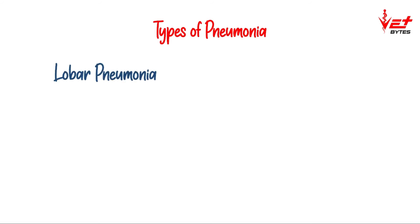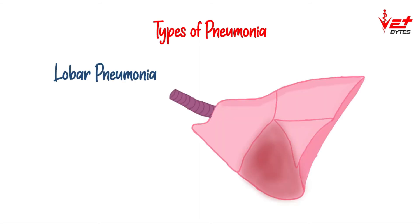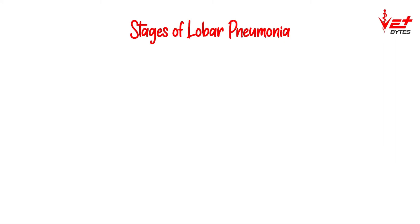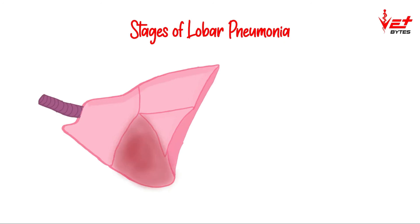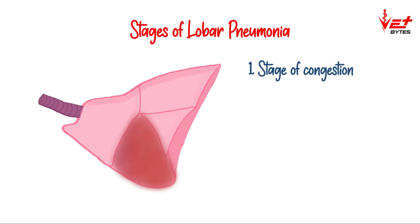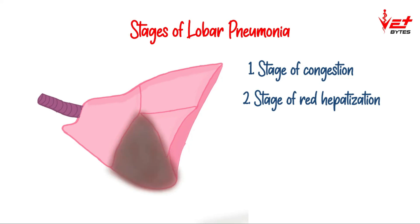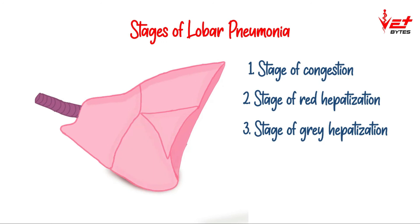The next one is lobar pneumonia, where a particular lobe of a lung is completely affected. Lobar pneumonia occurs in stages. First, there will be hyperemia and edema in the alveoli, referred to as the stage of congestion. Then the lung becomes red, consolidated, and solid, resembling the liver — referred to as the stage of red hepatization. Then the lung becomes gray in color, referred to as the stage of gray hepatization. Finally, there will be liquefaction, the exudate is removed, and the lung returns to its normal state, referred to as the stage of resolution.